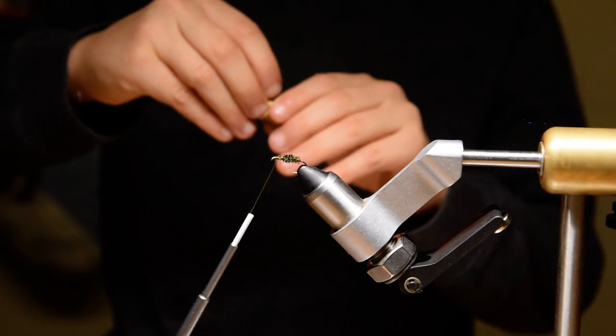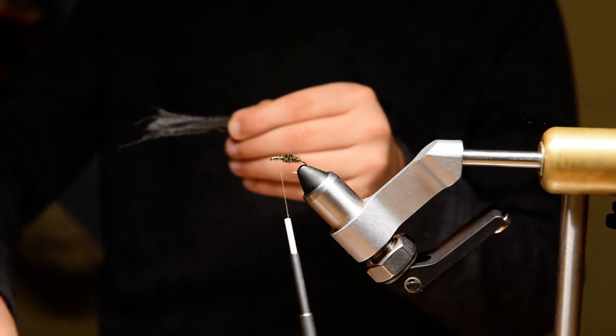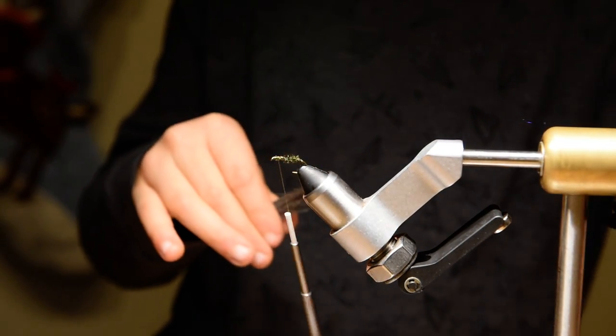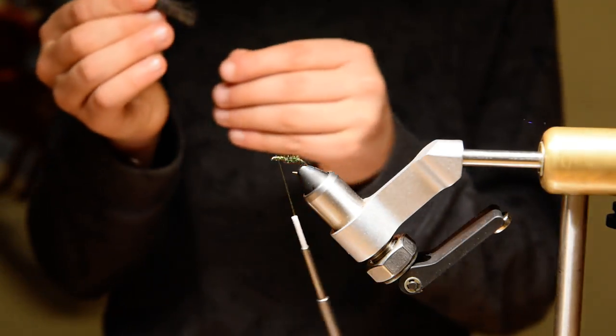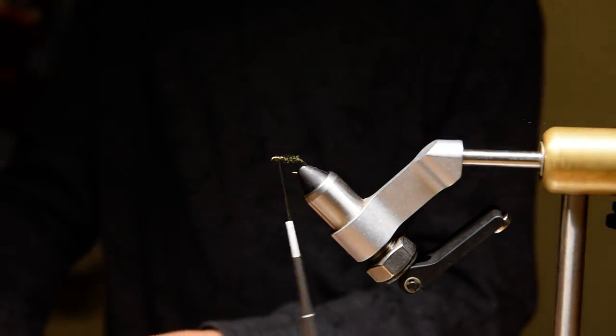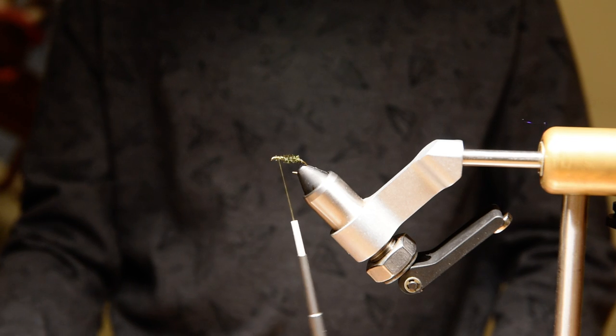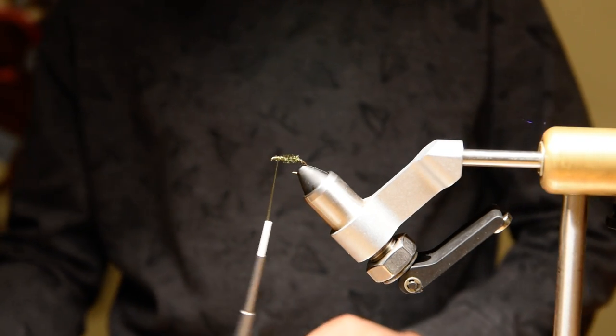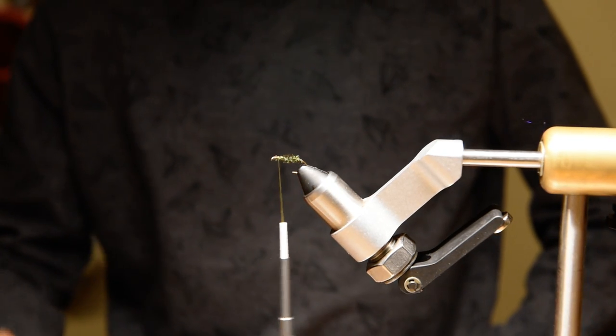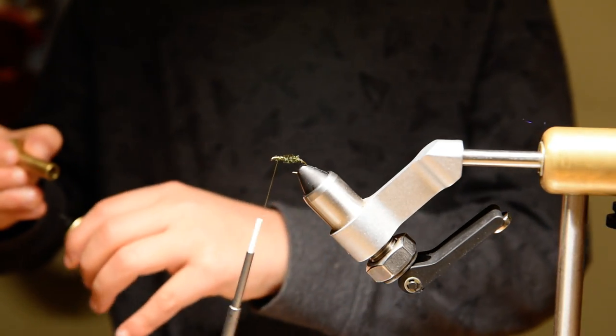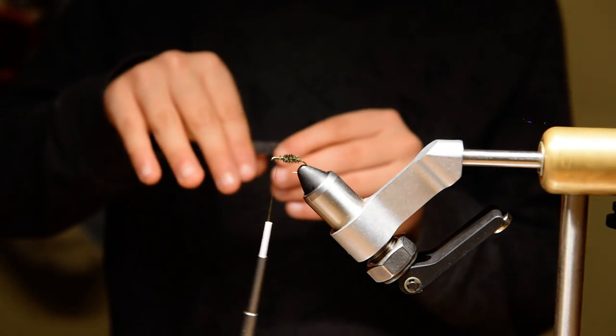Then we're going to take our stacked deer hair, just tilt it a little, pull it off, and grab it right out. Then we're going to grab the butts and sort it all out. So we'll just stack it one more time if we want the little tips to be aligned. So we'll just do that one more time. Then you're just going to pull them out. Grab the butts.